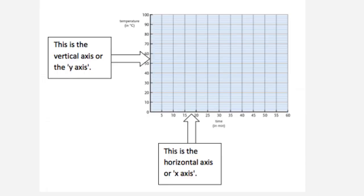Before you describe the graph, you should know one thing — the horizontal axis and the vertical axis. The vertical axis is the Y-axis and the horizontal axis is the X-axis. You can see what is the vertical axis and horizontal axis from this picture.